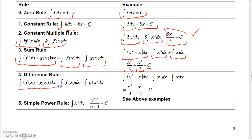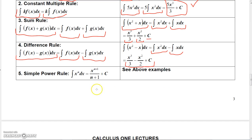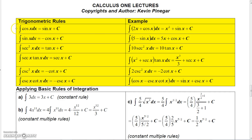Similarly, the difference rule states that the integral of the difference of two functions equals the difference of their individual integrals. So the integral of x² minus x dx equals the integral of x² dx minus the integral of x dx, giving x³/3 minus x²/2 plus a constant.